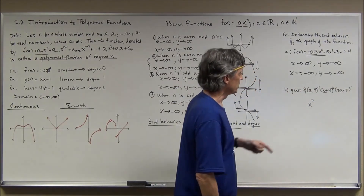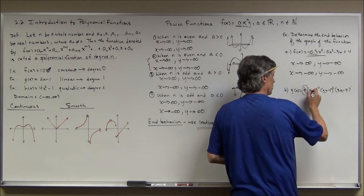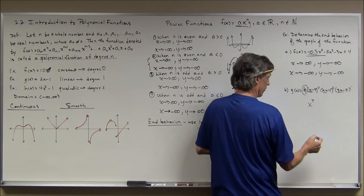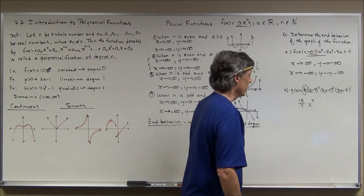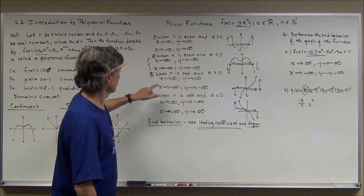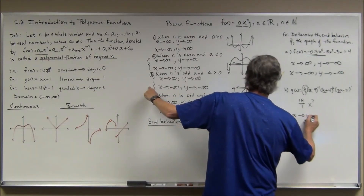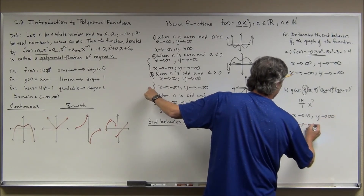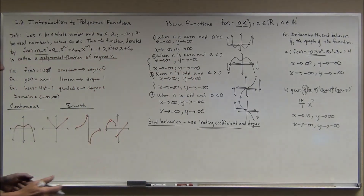The second example is written in factored form. The x terms have powers of four, two, and one, giving a total degree of seven. The leading coefficient comes from multiplying: six-sevenths times three gives eighteen-sevenths. So the degree is odd and the leading coefficient is positive. Therefore: as x goes to infinity, y goes to infinity; and as x goes to negative infinity, y goes to negative infinity. After determining end behavior, graph these on your graphing calculator to verify your sketches match the leading term analysis.